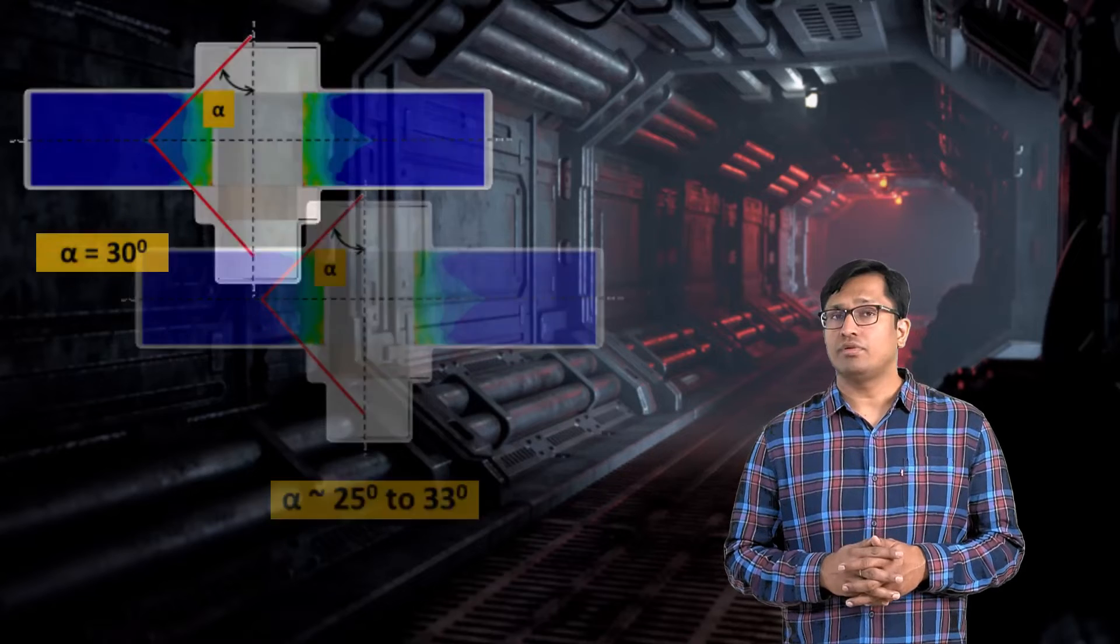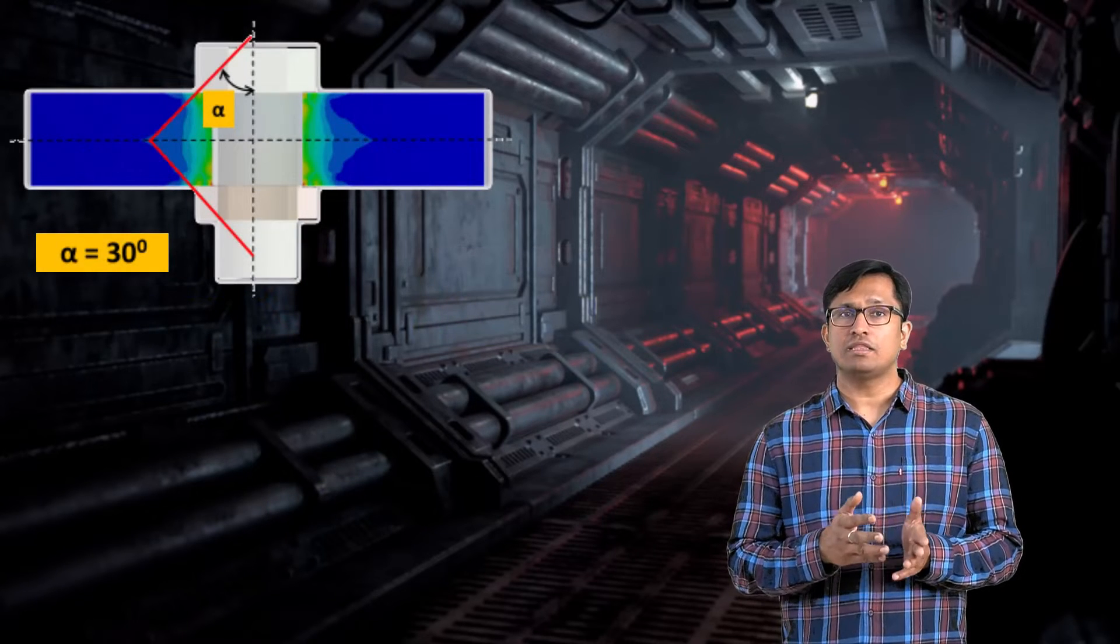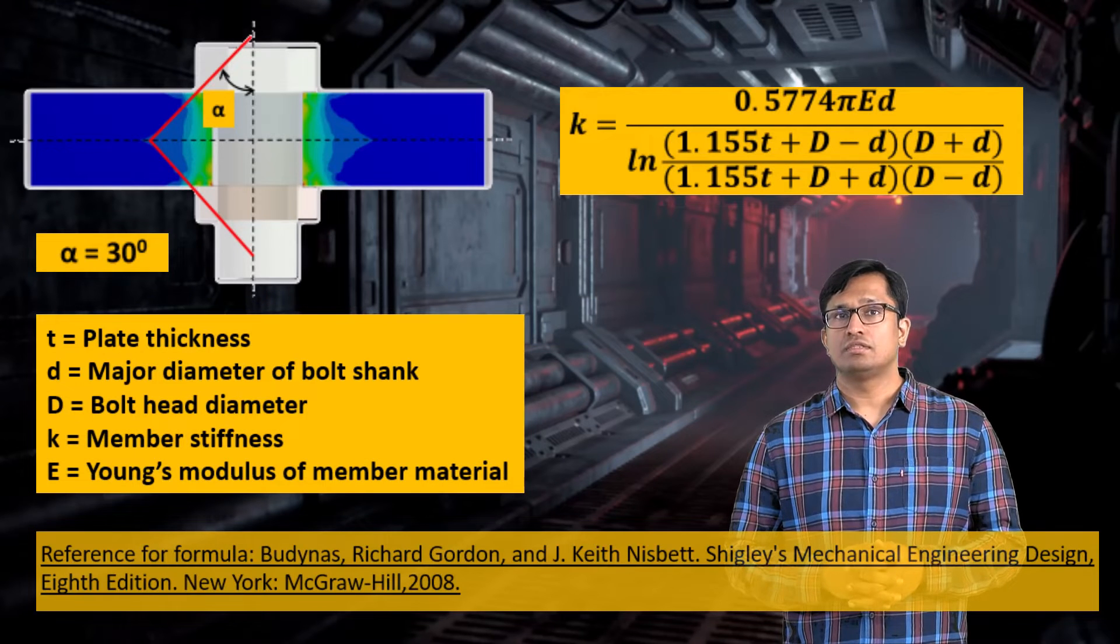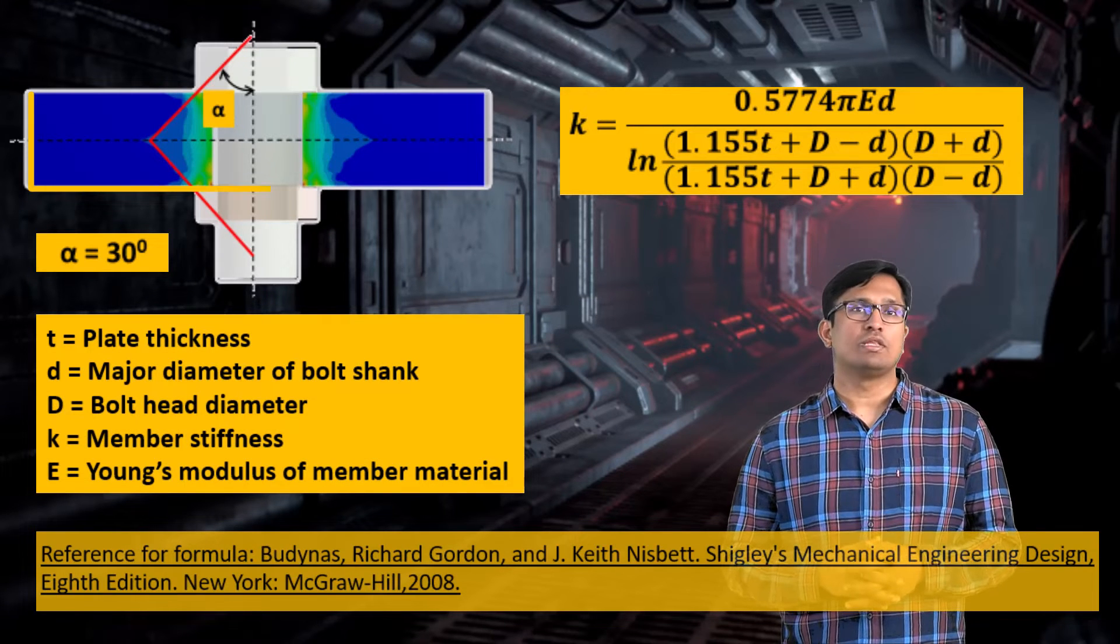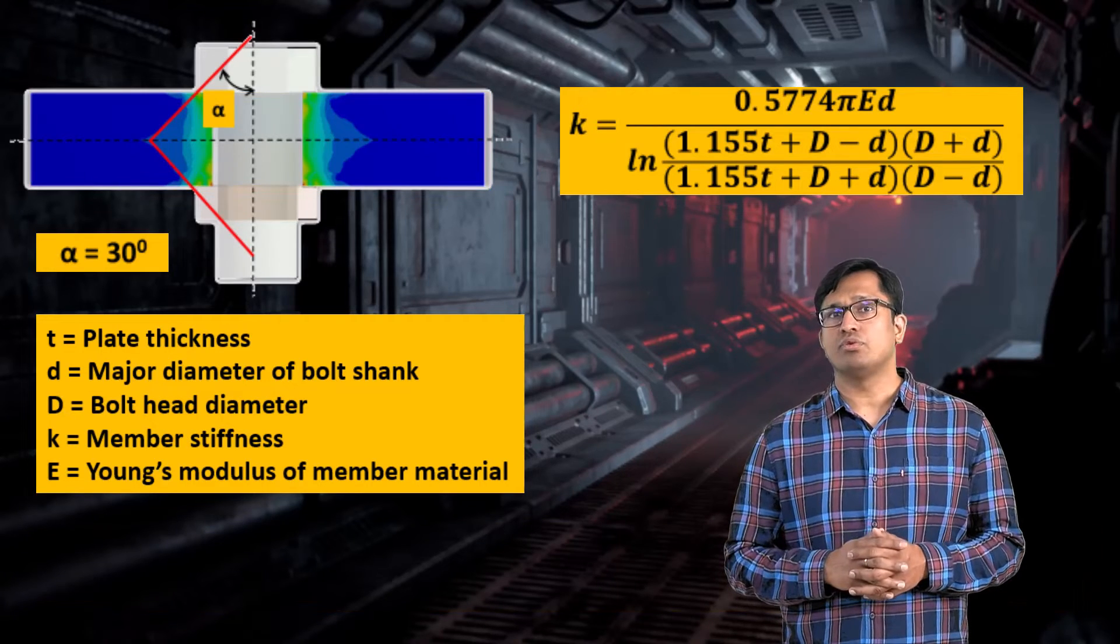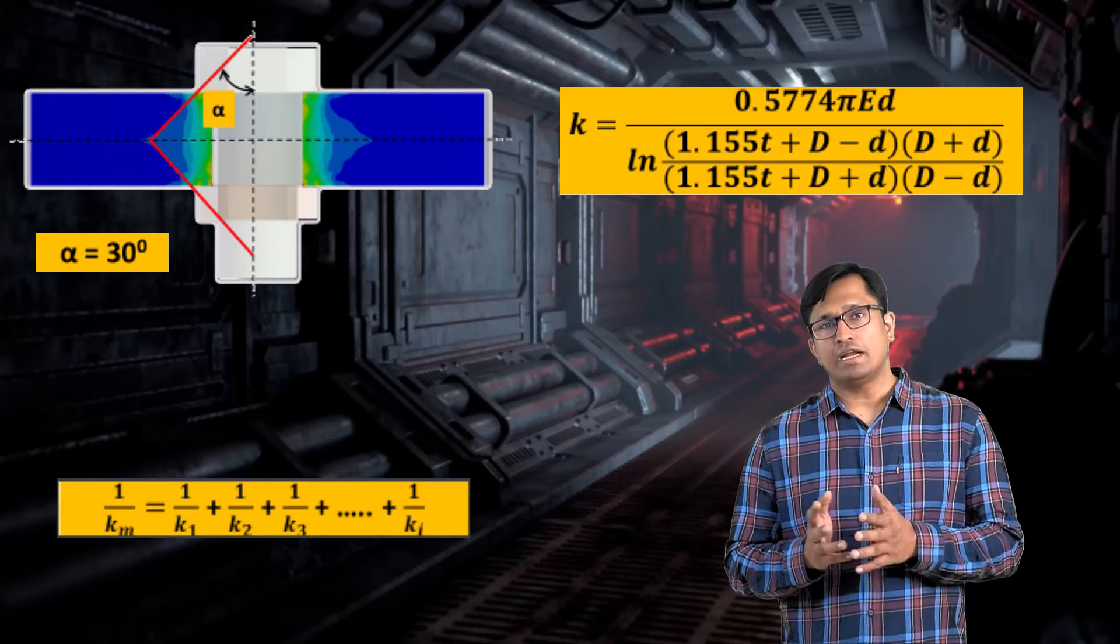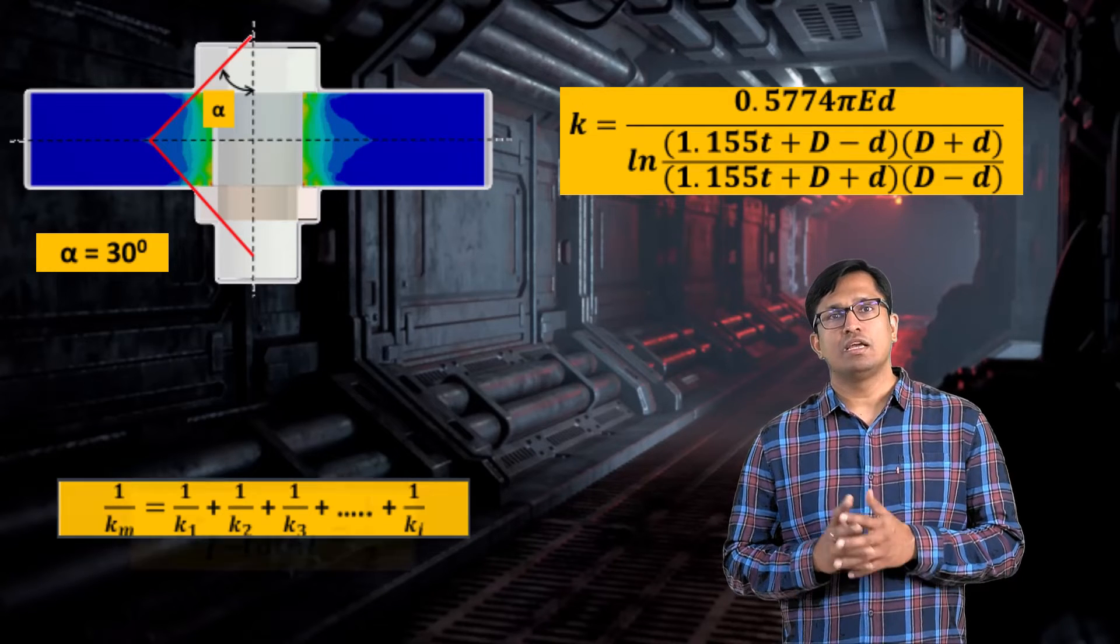Assuming an alpha of 30 degrees, the stiffness of one clamped part is given by this formula. Since we have two plates of equal thickness and same properties, we get the same stiffness for both the clamped parts and using the spring in series formula, we get the total member stiffness as shown here.